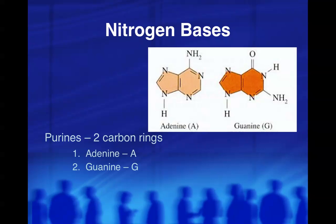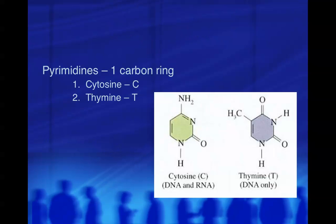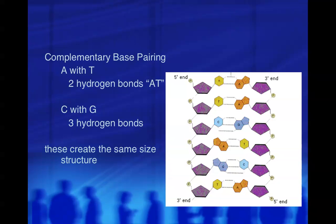The nitrogen bases are categorized into two groups. The purines, which have two carbon rings, are adenine and guanine. The pyrimidines have one carbon ring and are cytosine and thymine, as pictured. So cytosine does not pair with thymine; it pairs with guanine. This is what makes the structure so special — complementary base pairing. A always pairs with T with two hydrogen bonds, and G always pairs with C with three, so you always have the same-size structure across, which makes sense for a consistent ladder.